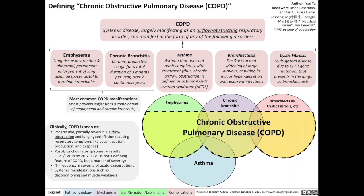The fourth manifestation of COPD is bronchiectasis, which is defined as destruction and widening of large airways, resulting in mucous hypersecretion and recurrent infections.